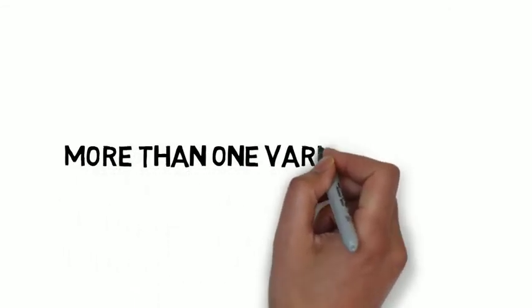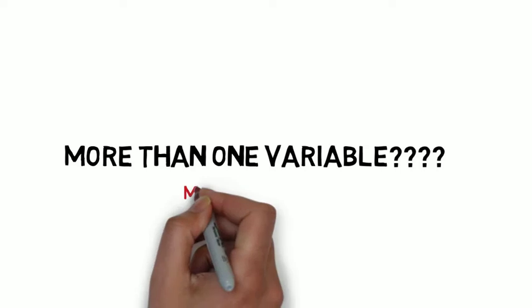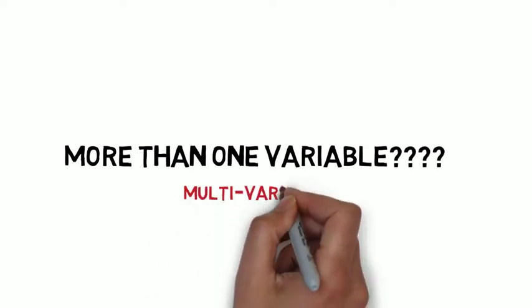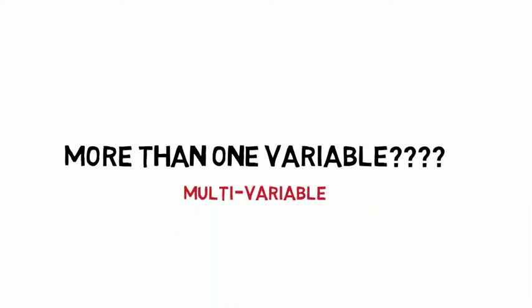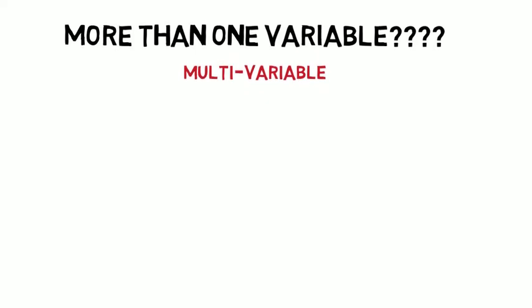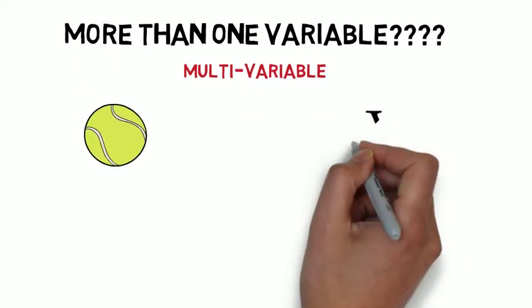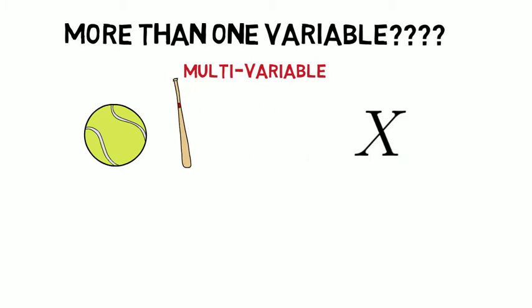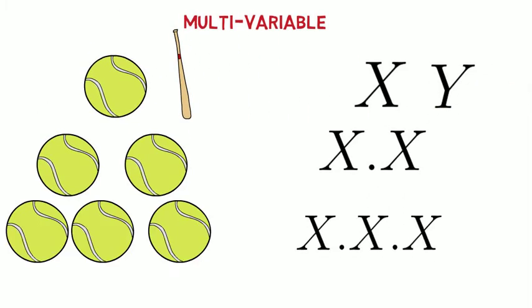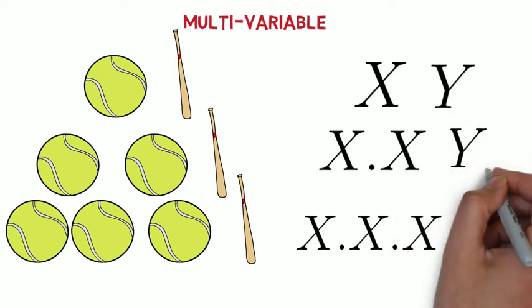But what will happen if we have more than one variable? How we will find degree in such case? Let's firstly understand what is the meaning of multi-variable. Suppose in previous situation, if one ball is represented by one variable x, now let's suppose one bat is represented by a variable y. If we distribute one bat in each situation, let's see how we can write variables now on the right side.